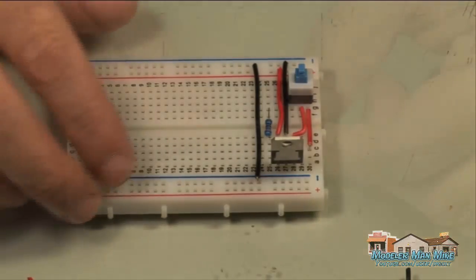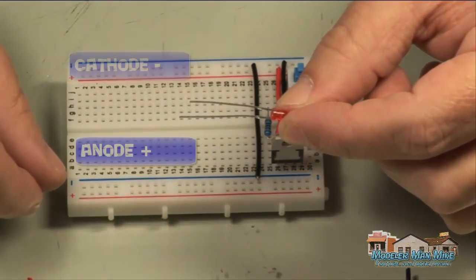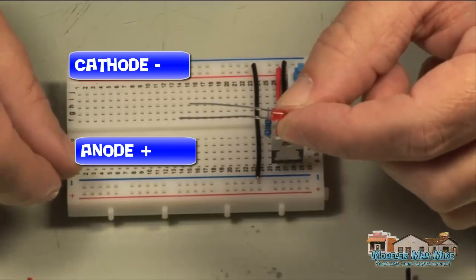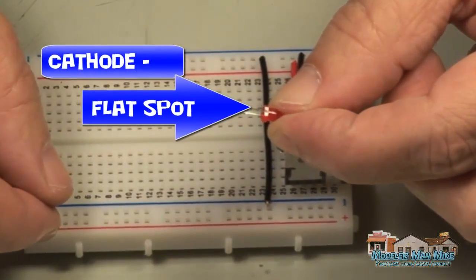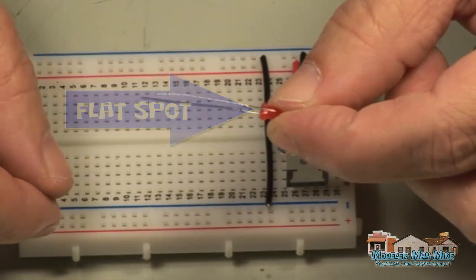You can kind of see that goes to the pin three or the leg number three on the 7805, scoots over a row. This LED cathode, anode, there's a flat spot shows the negative end.